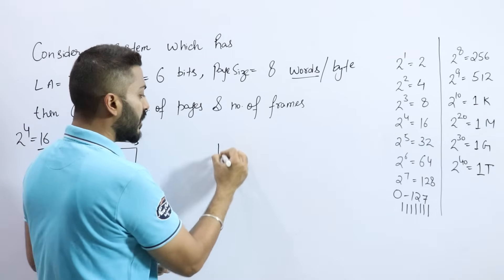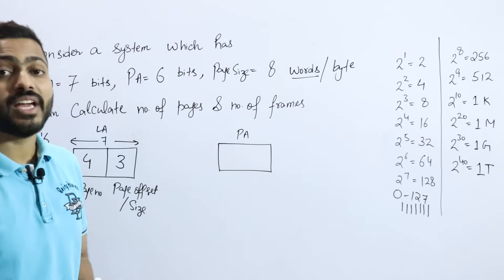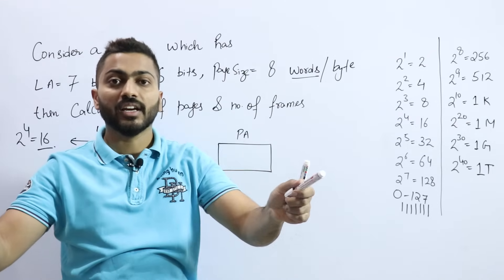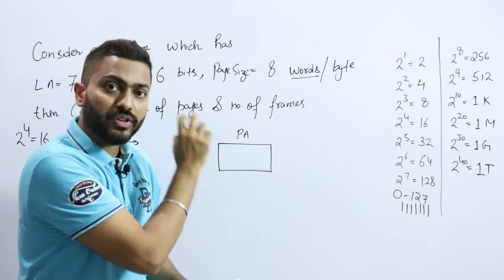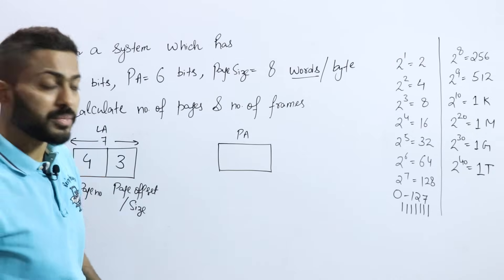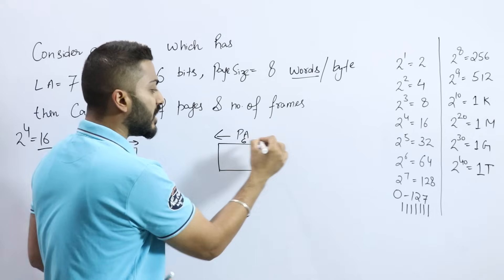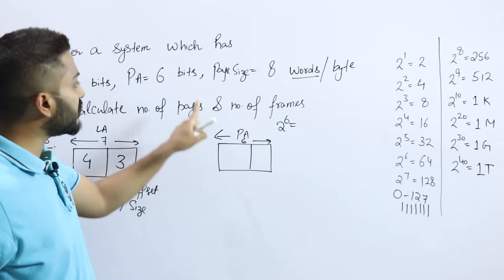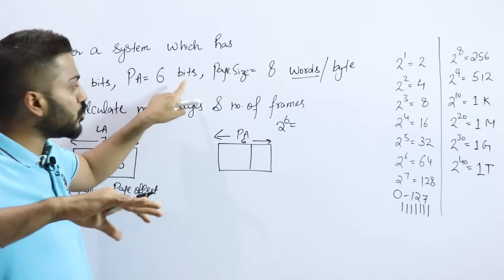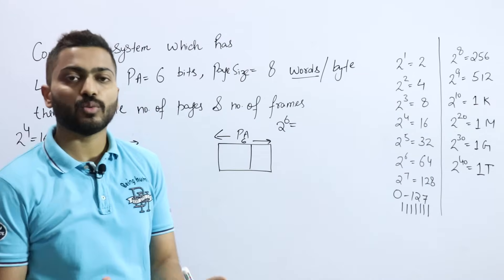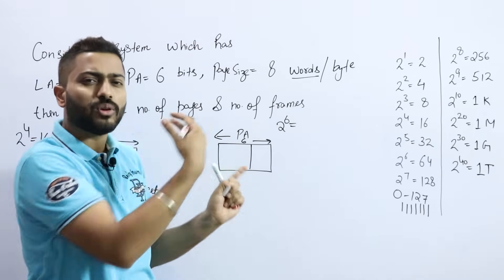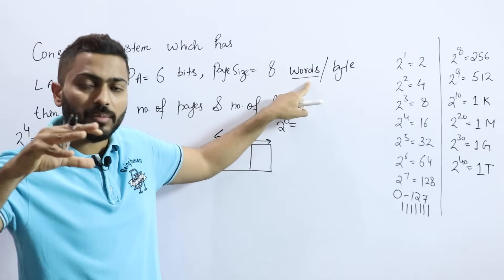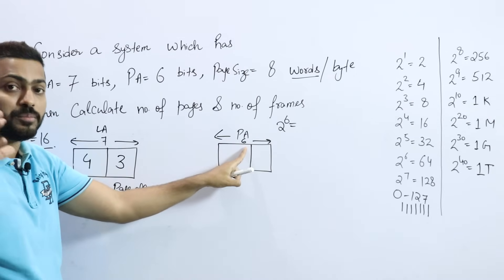The physical address is directly related to main memory — the size of main memory depends on the physical address. The physical address is given as 6 bits, so the total main memory size is 2 raised to power 6, which is 64. So the size of main memory is 64 words, represented using 6 bits.